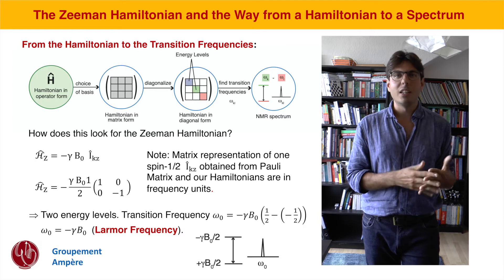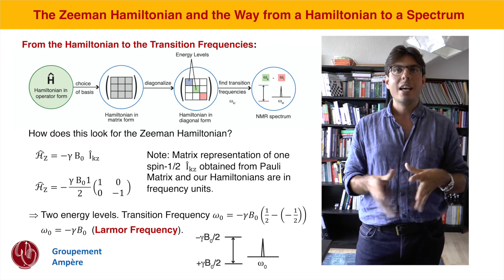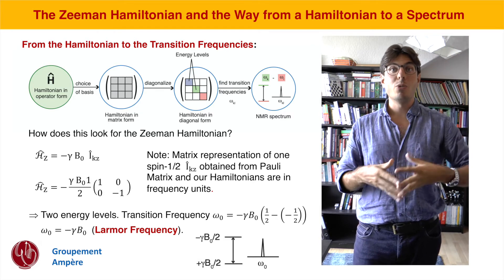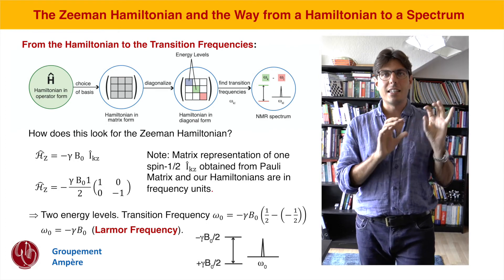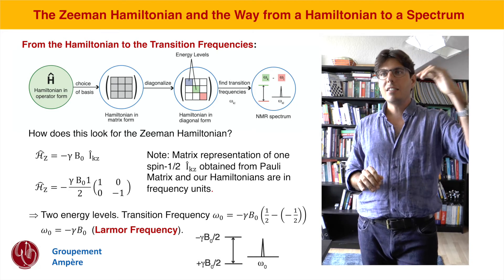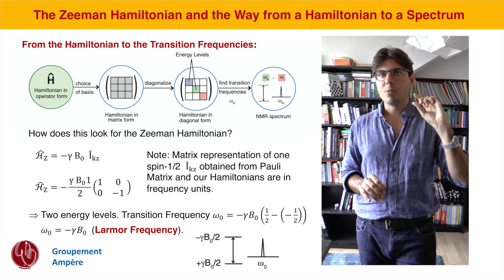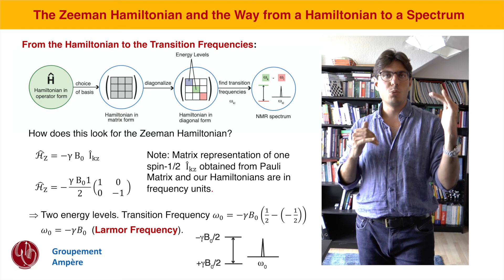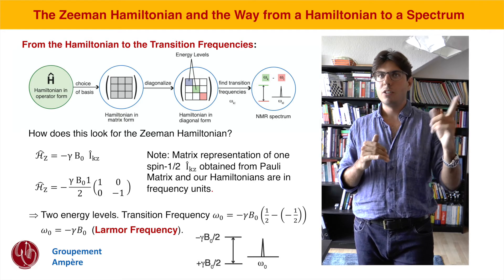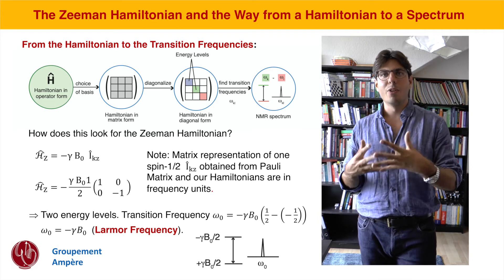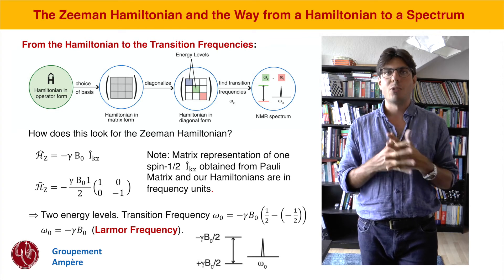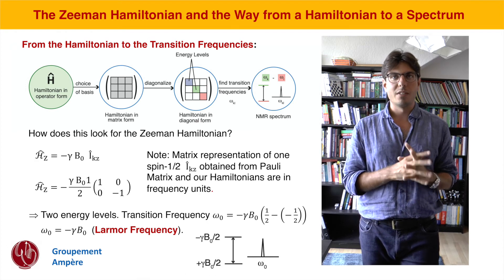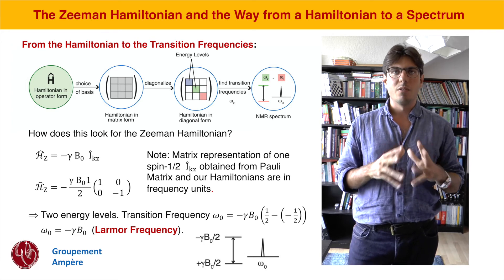In the case of the Zeeman Hamiltonian it wasn't even really necessary because it was already diagonal in the basis set we chose. Each diagonal element corresponds to an eigenvalue of the Hamiltonian, and the eigenvalues correspond to the energy states. So the transitions occurring between these energy levels can be calculated by taking the difference between eigenvalues of the Hamiltonian — the difference between two diagonal elements gives you the position of your spectral lines. Note that with this method you're not taking into account intensity, and it can also be that the intensity of a certain transition is zero.